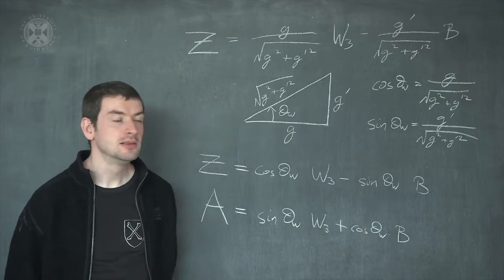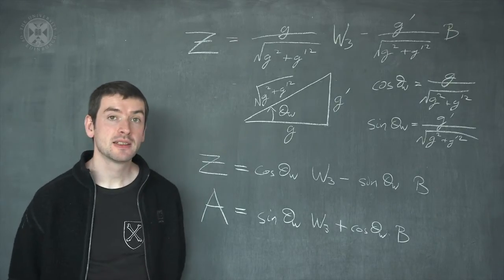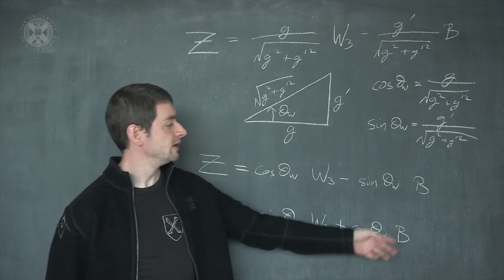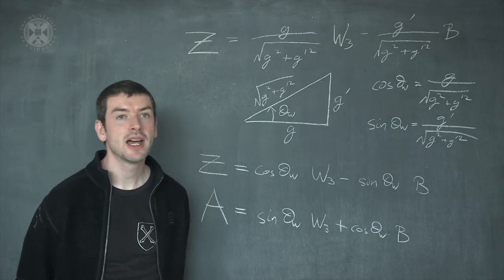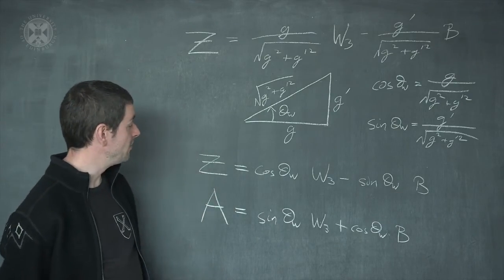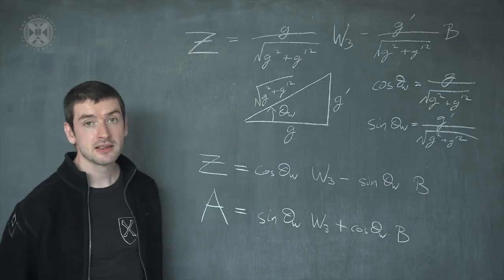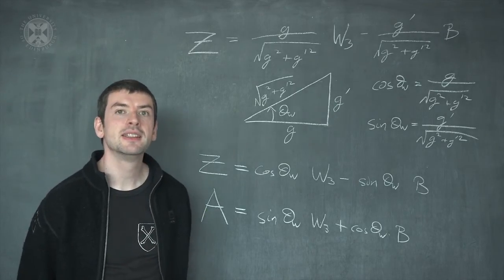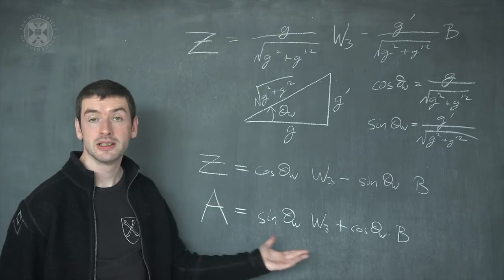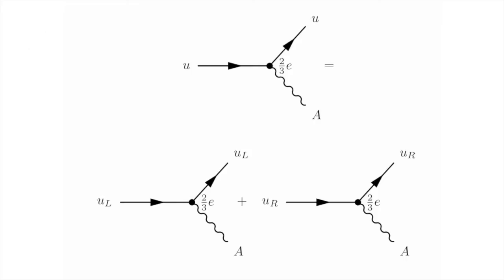We've seen in the standard model that the massless vector bosons, the W3 and the B, mix together to form a massive vector, the Z boson, and also the massless photon. Now let's see how this fits in with what we already know about how light interacts with matter. Let's begin with the up quark. The up quark has charge two-thirds, so it interacts with the photon with strength two-thirds times the electric charge E.